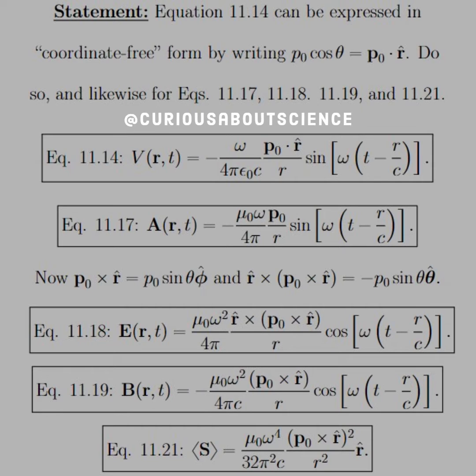Now, similarly, if we do the same thing as the dot products, we have cross-products for the fields, so P-naught cross R-hat gives us P-naught sine theta phi-hat. And then if we use R-cross P-naught cross R and back-cab and evaluate it, we get negative P-naught sine theta theta-hat. And if we replace everything in the field equations,